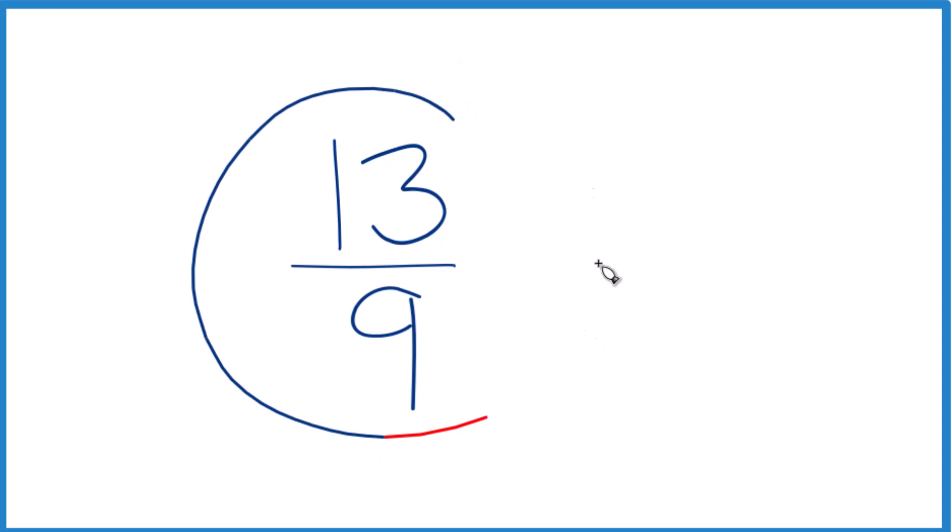Let's simplify the fraction 13 ninths, and we'll also write this as a mixed number. So first off, to simplify 13 ninths, the only number that goes into 13 and 9 evenly is 1. So that means this is already simplified, and we can't reduce or simplify this any further.